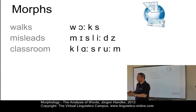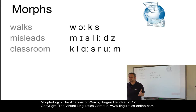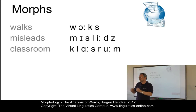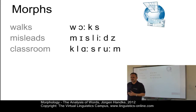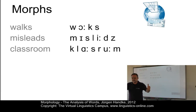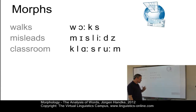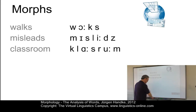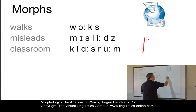Let's now perform a morphological analysis of some selected words. We know that we have to base our decisions on phonology for various reasons. Many languages do not have writing systems at all, and many have writing systems that are not phonetic in character — so-called phonographic writing systems. To generalize our decisions across the languages of the world, we have to base our analysis on phonology. So here we have walks, misleads, and classroom, and our first task is to insert boundaries between those parts which we think can be isolated.